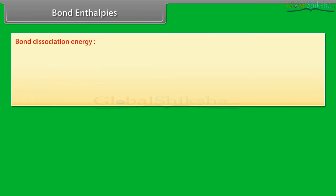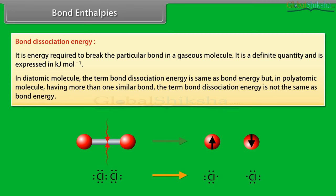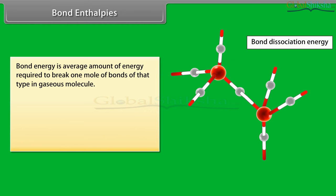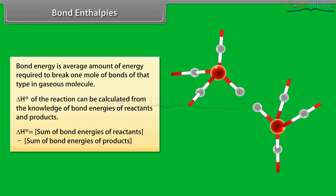Bond enthalpies: bond dissociation energy is defined as the energy required to break a particular bond in a gaseous molecule; it is a definite quantity expressed in kJ/mol. In a diatomic molecule, bond dissociation energy is the same as bond energy. In a polyatomic molecule having more than one similar bond, bond dissociation energy is not the same as bond energy. Bond energy is the average amount of energy required to break one mole of bonds of that type in a gaseous molecule. ΔH° of a reaction can be calculated from the bond energies of reactants and products.